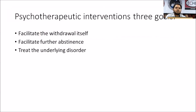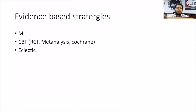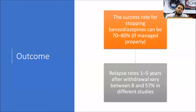Psychotherapeutic intervention goals include facilitating withdrawal, facilitating further abstinence, and treating the underlying disorder. Interventions range from a single brief consultation — such as written advice to stop — to cognitive behavioral therapy focusing on anxiety management and stress coping strategies. There is evidence for motivational interviewing and CBT. A meta-analysis of 25 studies found CBT superior to motivational interviewing. Eclectic therapy — using different forms of therapy — has also been useful.